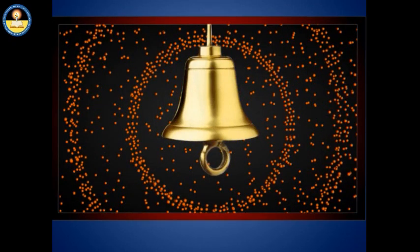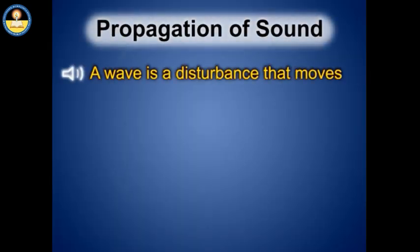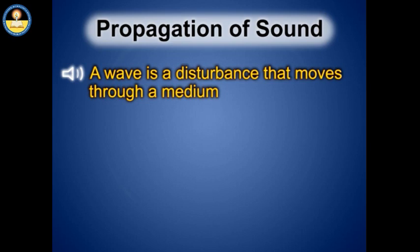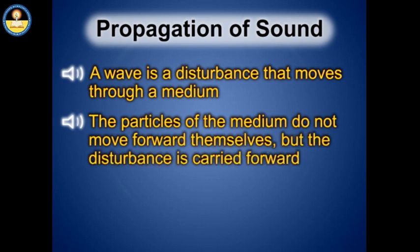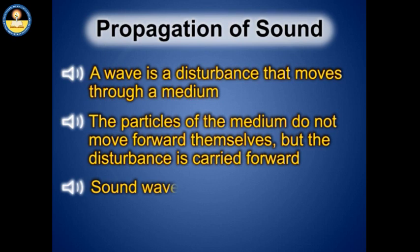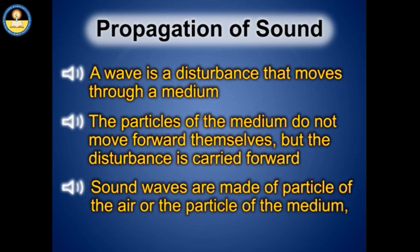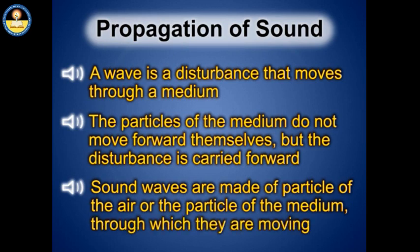The disturbance created by the source of sound travels through the medium in the form of waves. A wave is a disturbance that moves through a medium when the particles of the medium set neighboring particles into motion. The particles of the medium do not move forward themselves, but the disturbance is carried forward. This is what happens during propagation of sound in a medium. Therefore, sound waves are made of particles of the air or the particles of the medium through which they are moving. Sound waves are invisible waves, but they are similar to water waves.